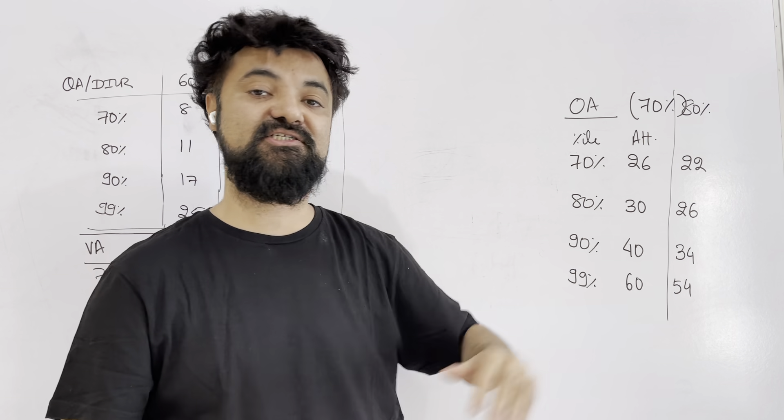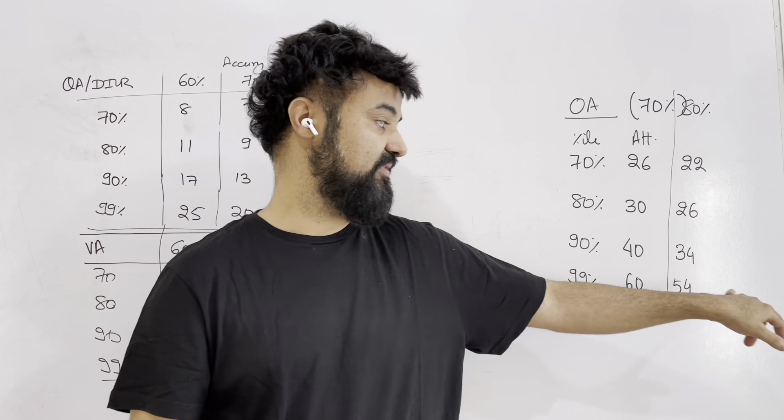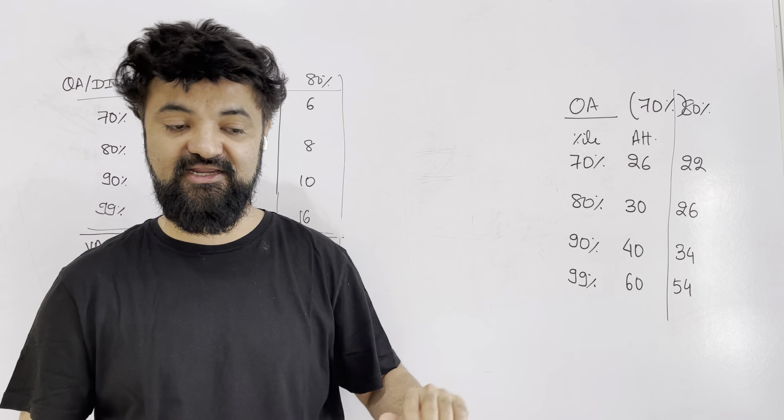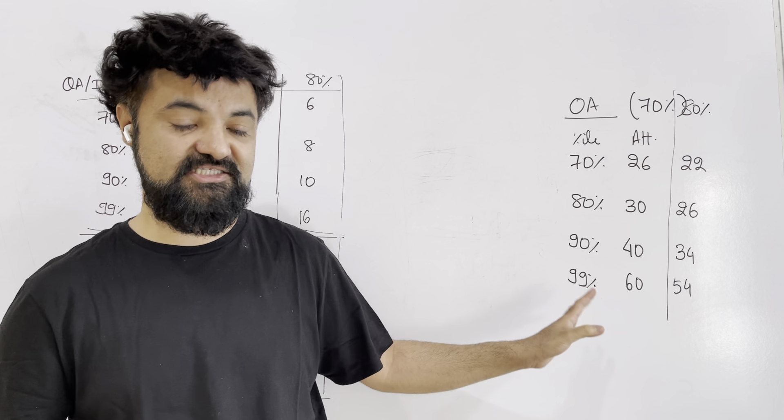So overall your attempt have to touch 40 for 90 percentile, if your accuracy is 80 percent, then you can touch at 34 as well. We have students whose accuracy is more than 85 percent, in that case even 50 question attempt is more than 99 percentile. So you have to adjust your accuracy as per this number. This is for the overall chart.